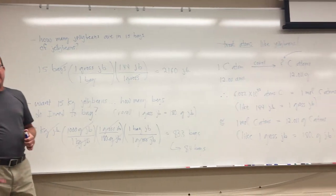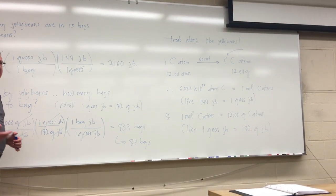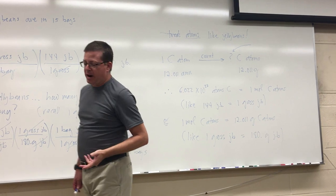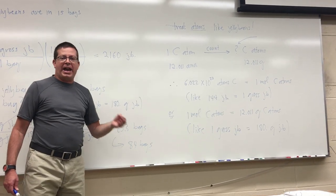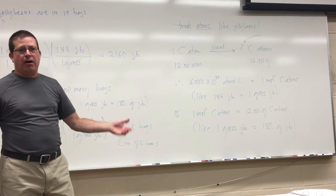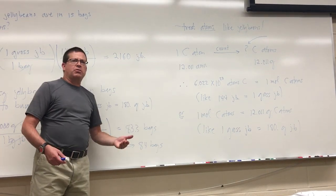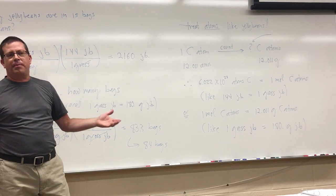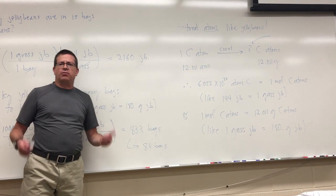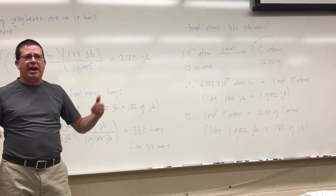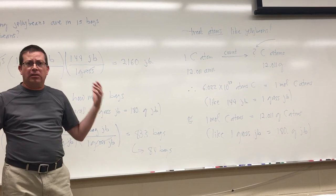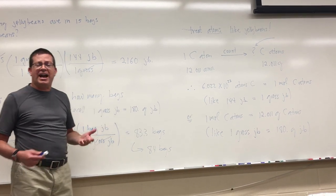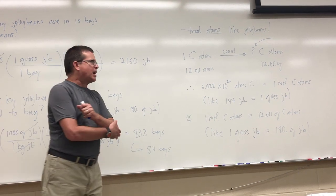Now let's take the same argument over to tiny particles like atoms. We're going to treat atoms pretty much like jelly beans. Atoms are extremely tiny — we can't weigh out individual atoms, we can't even weigh out grosses of atoms. Atoms are so tiny that I need a huge number of them before they even register on a balance. So we need a counting or grouping factor like a gross or a dozen, but it's going to have to contain a lot more things to make these masses measurable on a balance.